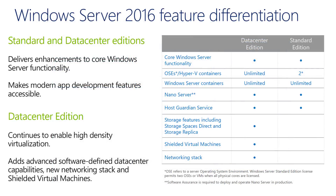Looking at the feature differentiation slide, both Standard and Data Center continue to deliver enhancements to core Windows Server functionality and make modern app development features accessible, including support for Nano Server. Important note: once you deploy Nano Server in a production environment you need Software Assurance applied to those servers. Data Center Edition continues to focus on incredibly high density virtualization requirements — for someone running just a handful of VMs, you need to do the math on cost per VM to determine if Data Center makes sense.